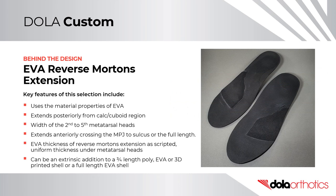An EVA reverse Morton's extension uses the material properties of EVA to provide more orthotic reaction force. It extends posteriorly from the calc-cuboid region, the width of the second to fifth metatarsal heads, and extends anteriorly crossing the MPJ to the sulcus or full length. The EVA thickness is as scripted by the practitioner and is of uniform thickness under all metatarsal heads. It can be applied as an extrinsic addition to a three-quarter length poly, EVA, or 3D printed shell, or on a full-length EVA shell.